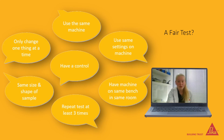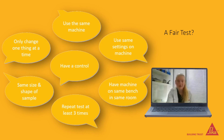Another way we make sure that it is a fair test is to measure the stretchiness of a sample that we have measured lots of times before. This special known sample is called a control and is used to check that the machine is working properly. If the tensometer measures the stretchiness of the control differently to usual, then we know that the machine is set up wrong or isn't working.